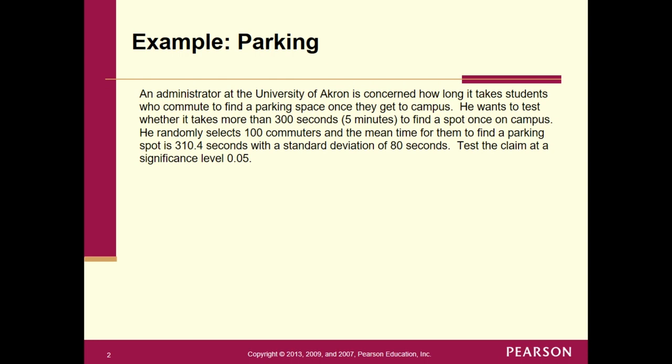He wants to test whether it takes more than 300 seconds, meaning five minutes, to find a spot once on campus. He randomly selects 100 commuters and the mean time for them to find a parking spot is 310.4 seconds with a standard deviation of 80 seconds. So test the claim and we're going to set the alpha, the significance level, to 5% or 0.05.